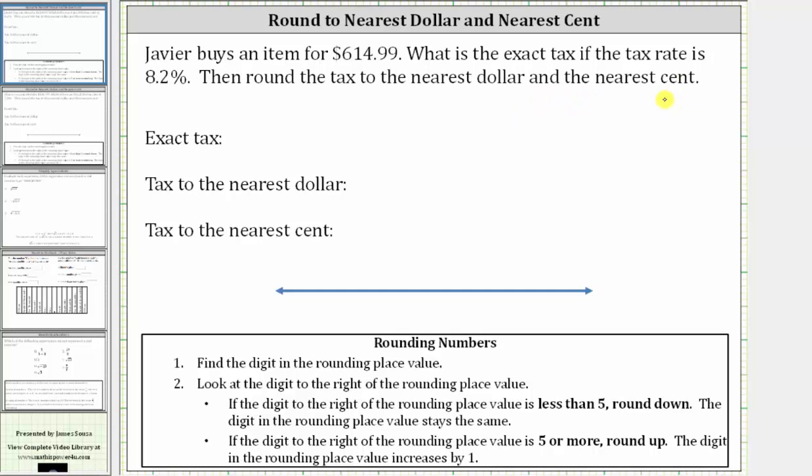The exact tax is 8.2% of $614.99. To find the percent of a number, we convert the percent to a decimal and multiply. So let's first convert 8.2% to a decimal.